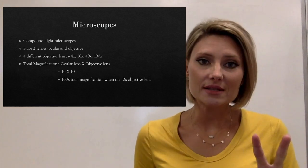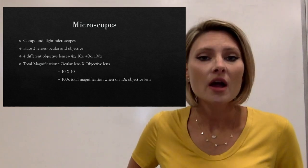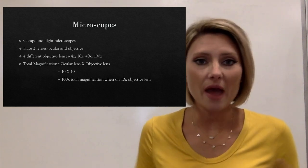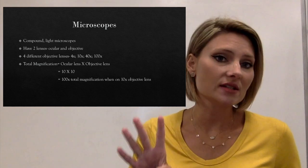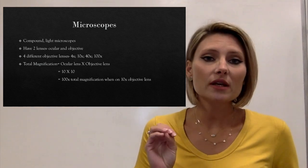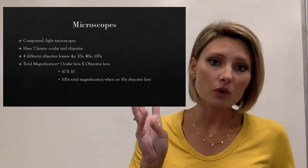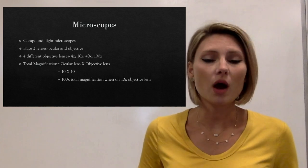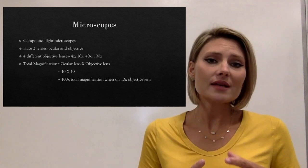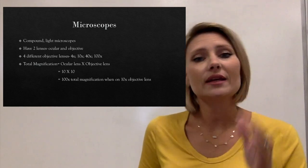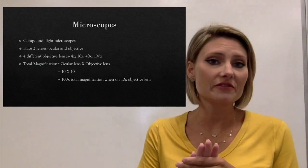Compound light microscopes have two lenses and use light to illuminate the specimen. These microscopes are very similar to the ones you've probably used in freshman lab. However, our microscopes have four objective lenses. Normally in the freshman lab you're only going to be using three, and ours have a fourth one that you may have never used before. Our microscopes have an ocular lens and four different objective lenses.